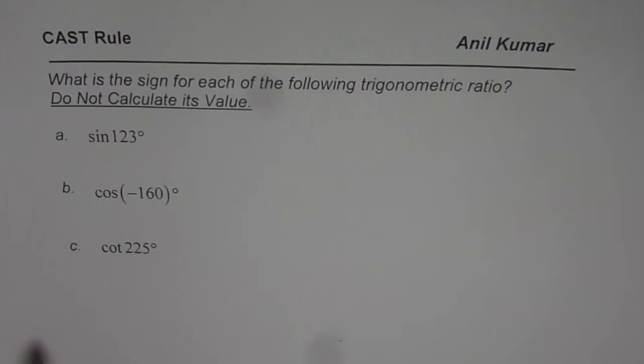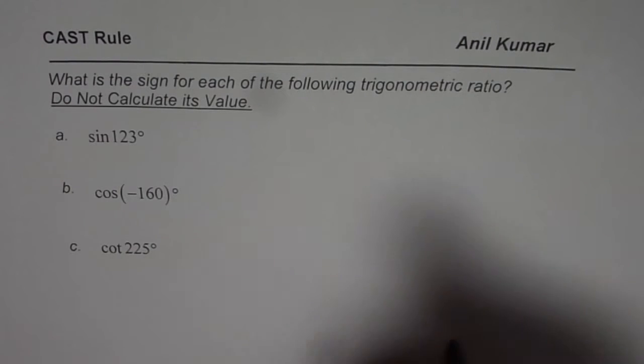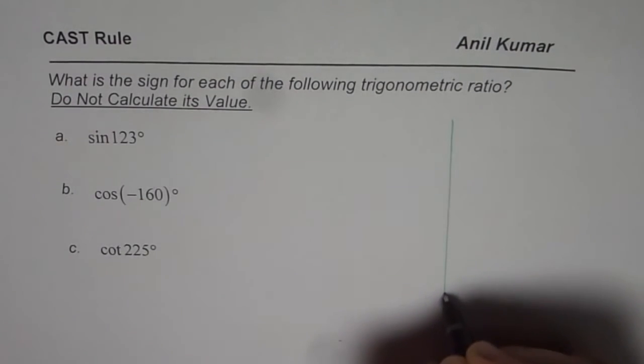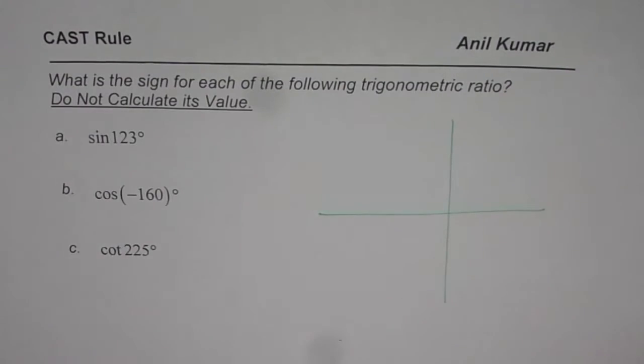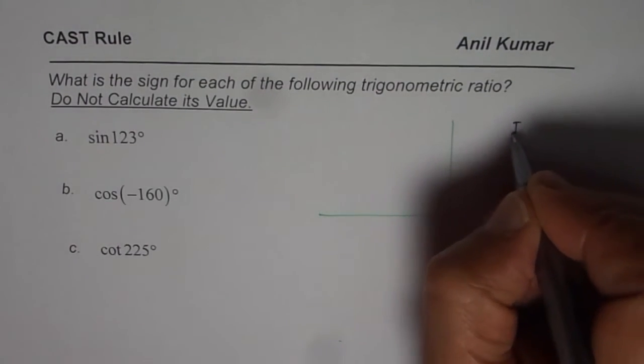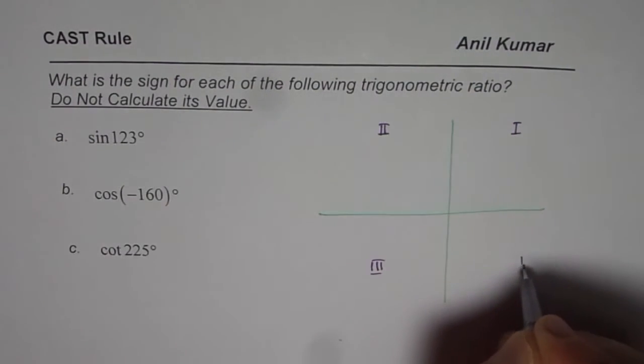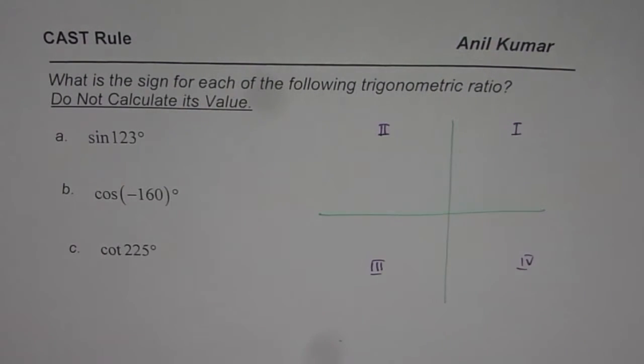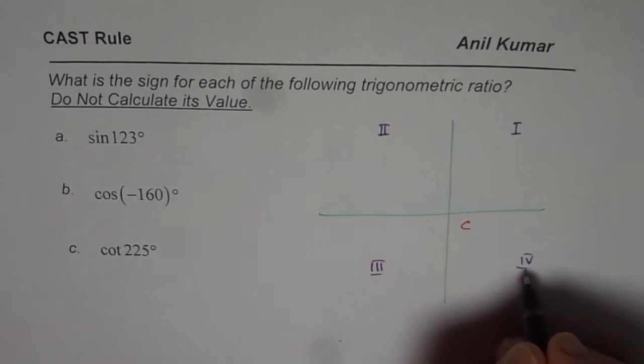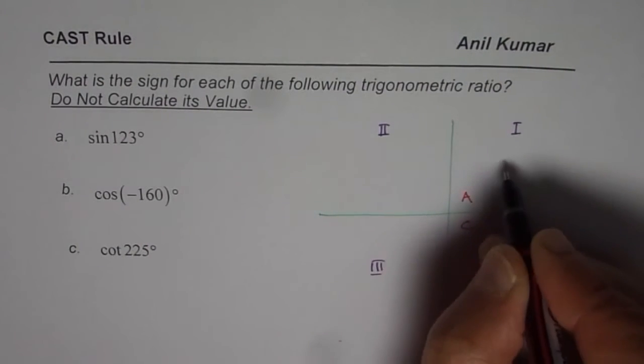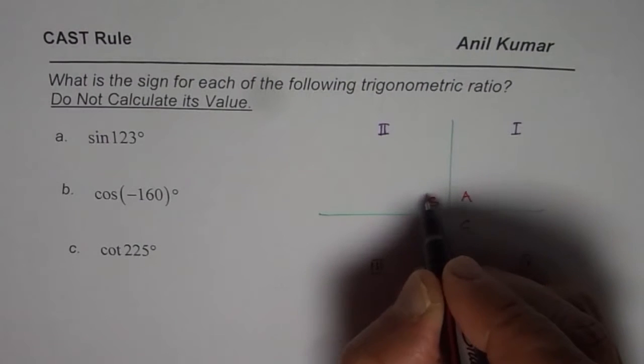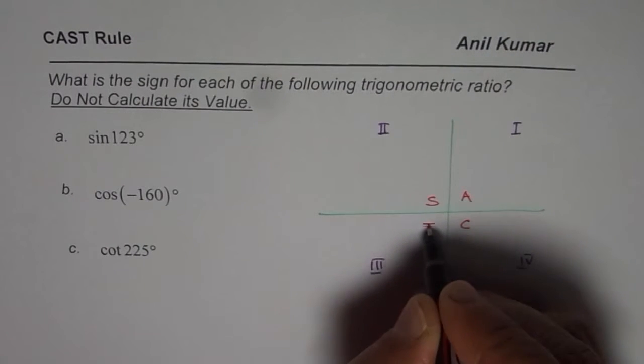While in this video, let us understand how to apply the CAST rule and find whether the sign of trigonometric ratio is positive or negative. So here is our coordinate plane and we know that it has four quadrants: 1, 2, 3, and 4. The CAST rule is that cosine is positive in quadrant 4, all are positive in quadrant 1, sine in quadrant 2, and tan in quadrant 3.